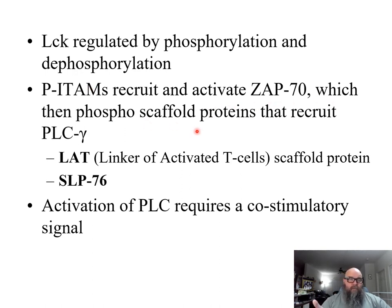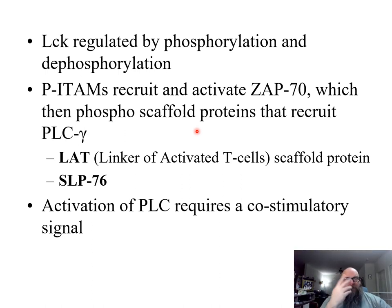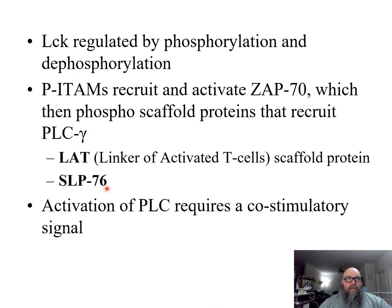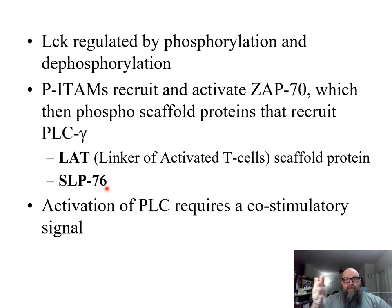ZAP70 will then phosphorylate scaffold proteins, which will then bring in, say, phospholipase C. Phospholipase C, which we talked about over the past two lectures, will then go through and cleave, releasing IP3 and so on. The scaffold proteins are known as LAT and SLP76. LAT and SLP76 do not want to interact with ZAP70 unless they are phosphorylated. Once phosphorylated, they interact with further downstream proteins.